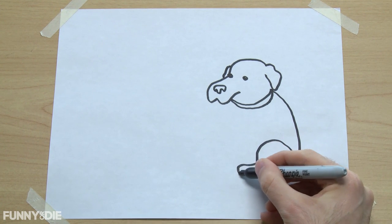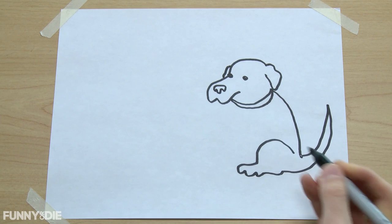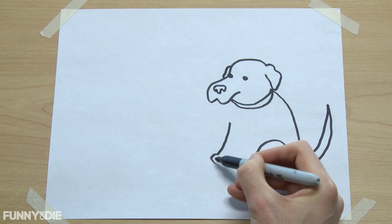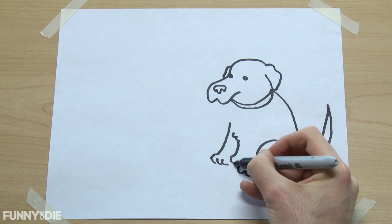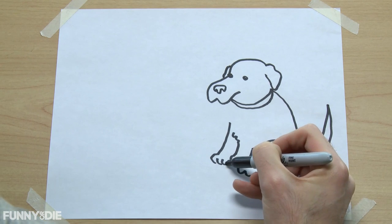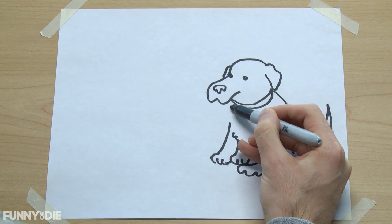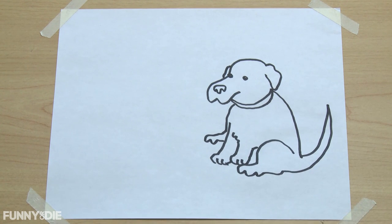Do his back leg here, his hind leg, tail, and front paws. Okay, and just a little bit of his back leg. Great, so we've got our main dog body here and...